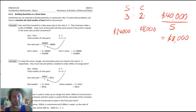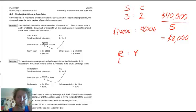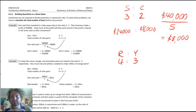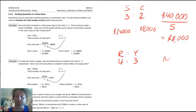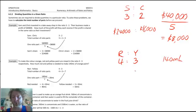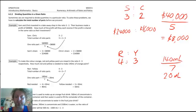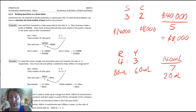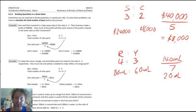To make the colour orange, red and yellow paint are mixed in the ratio 4 to 3. How much red and yellow is needed to make 140 ml of orange paint? We need 4 + 3 = 7 parts total. 140 ml ÷ 7 = 20 ml per part. So red = 4 × 20 = 80 ml, and yellow = 3 × 20 = 60 ml. Check: 80 + 60 = 140 ml. Since we multiplied by 20 in both cases, they're still in the same ratio.